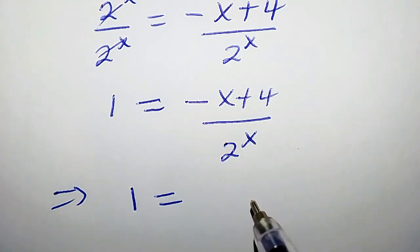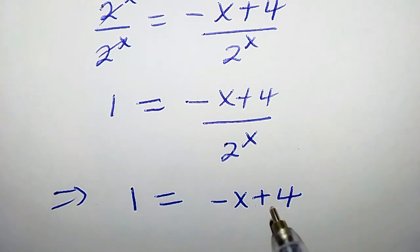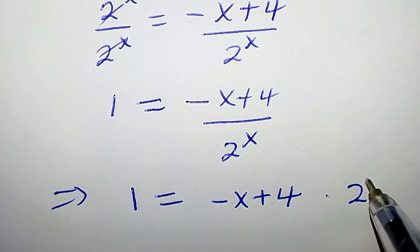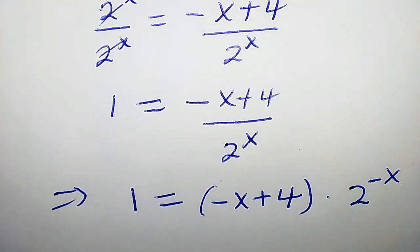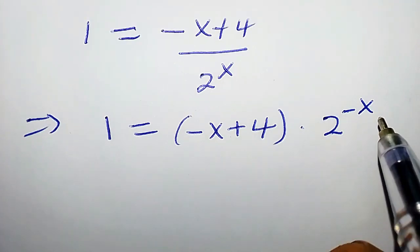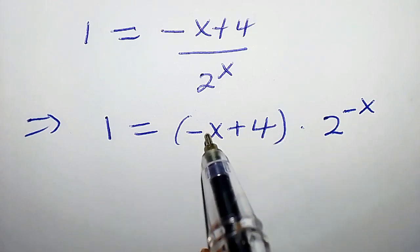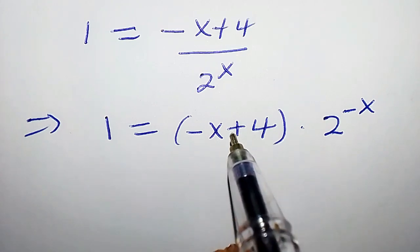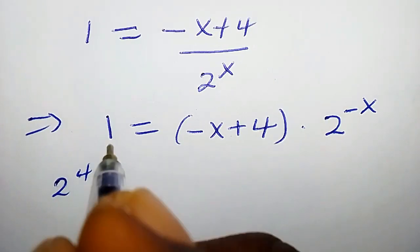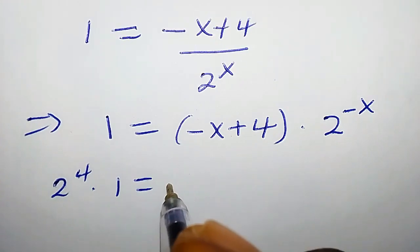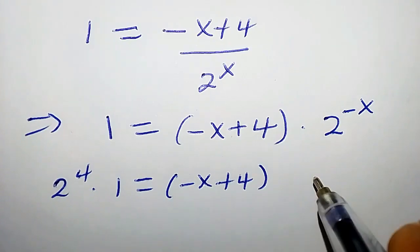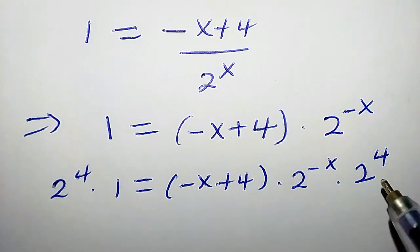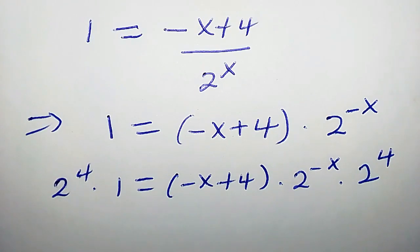This implies that 1 equals negative x plus 4. Suppose we want 2 to the power of x to be at the numerator — that will become 2 to the power of negative x. We can put this in brackets. To make this power be in the form of this coefficient, let's multiply both sides by 2 to the power of 4. So we're going to have 2 to the power of 4 times 1 equals negative x plus 4 times 2 to the power of negative x times 2 to the power of 4.